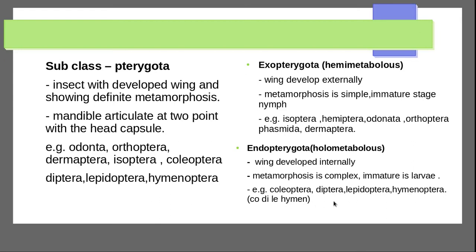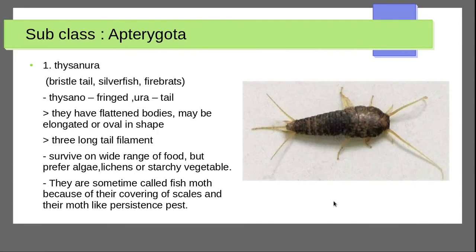Subclass Apterygota contains wingless insects. One order is Thysanura, which includes bristletails and silverfish. They have a flattened body that may be elongated or oval in shape, with three long tail filaments. They survive on a wide range of food but prefer algae, lichen, or starchy vegetables.